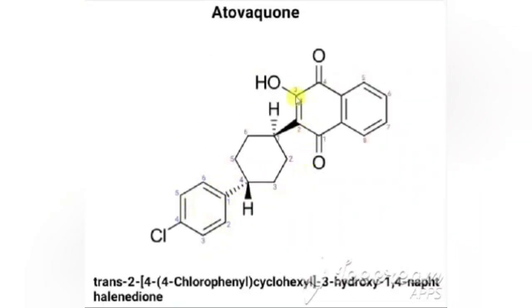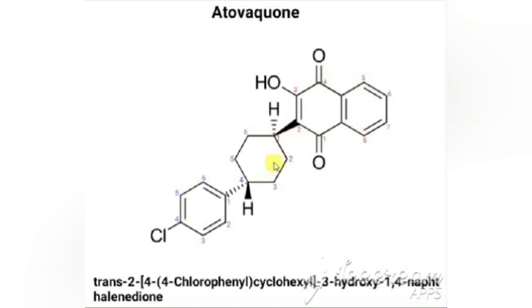The next drug is atovaquone. Its structure involves the fusion of two rings forming a naphthoquinone (naphthalene dione), with two ketones at positions 1 and 4 — hence 1,4-naphthalenedione. At the second position, a cyclohexyl group is attached, and the fourth position of cyclohexyl carries a phenyl group, which in turn has a chlorine at its fourth position.